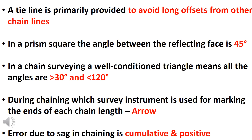In chain survey, a well-conditioned triangle means all the angles are greater than 30 degrees and less than 120 degrees.